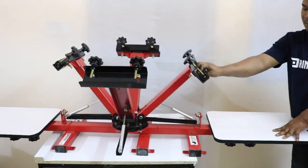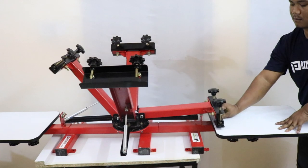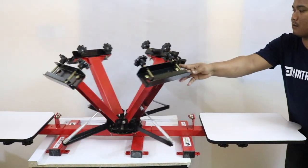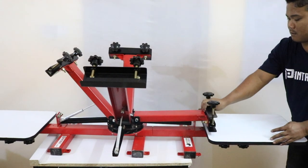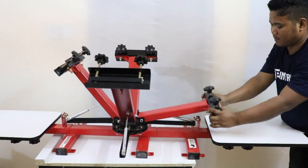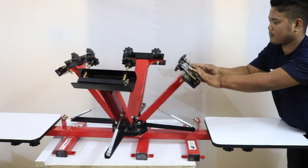So this is the 4x2 heavy duty screen printing machine, and here also we are checking all the arms. Yes, this is placed properly. While printing you can do both sides.